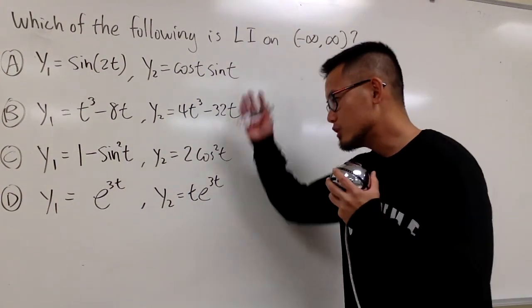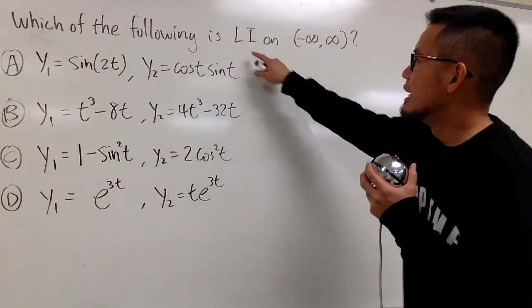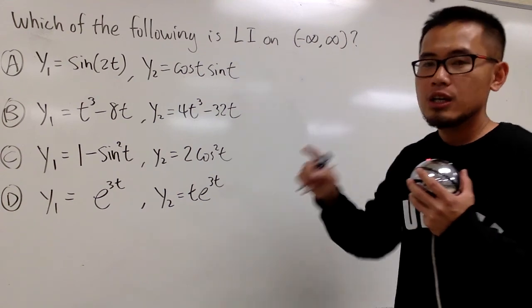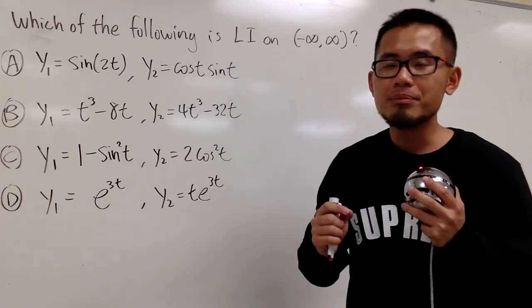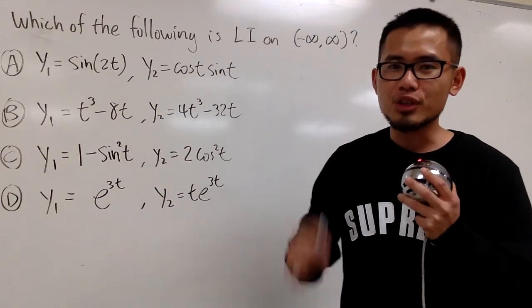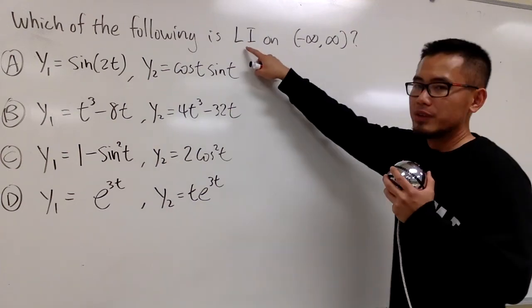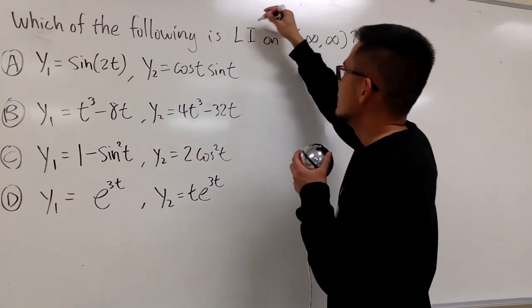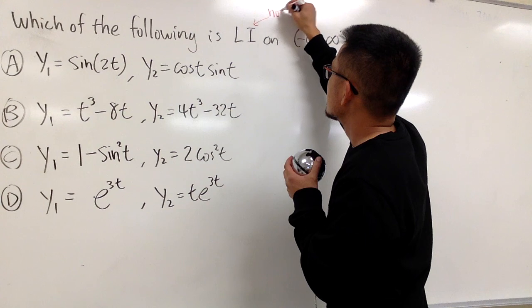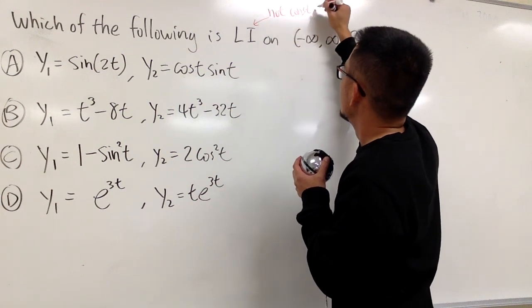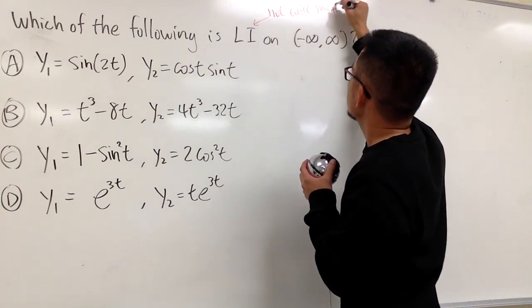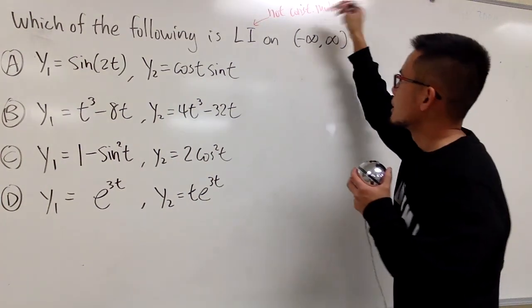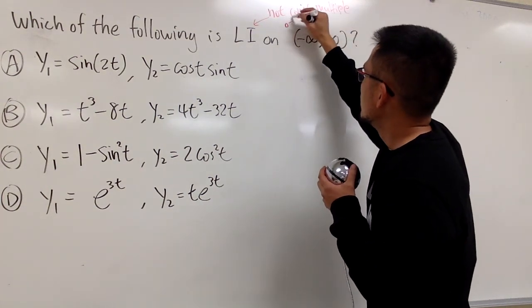In this situation, we're going to check which of these choices is linearly independent. Remember, linearly dependent means that two functions are constant multiples of each other, but for independent, not constant multiples of each other.